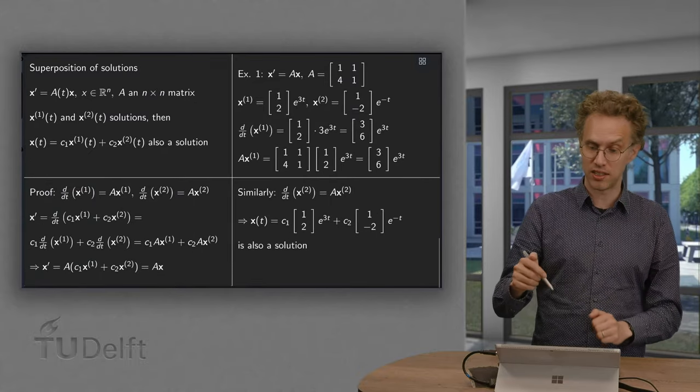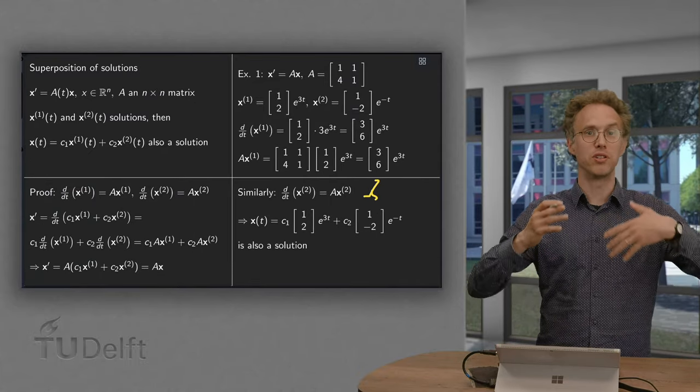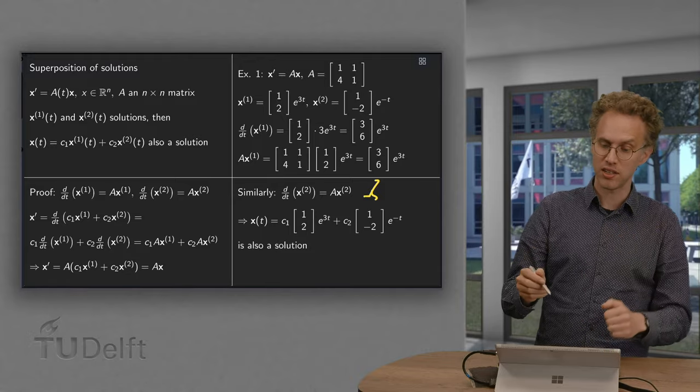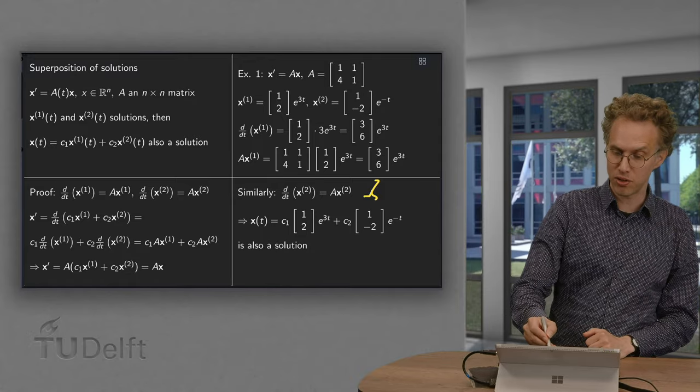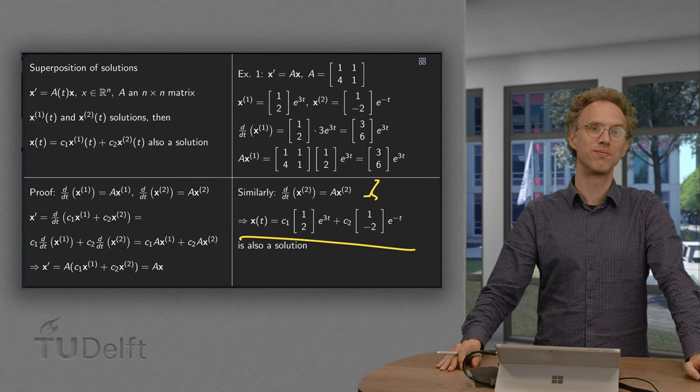Similarly, you can check that the d/dt of x2 equals A times x2. And then we know, because x1 and x2 are solutions, that a linear combination of those two x(t) is also a solution of our differential equation.